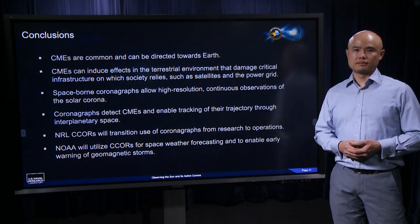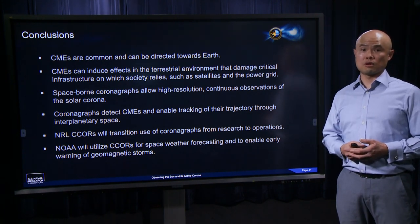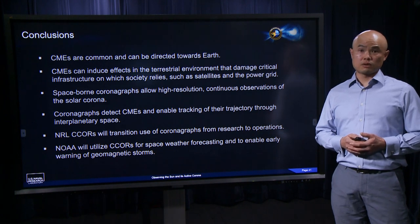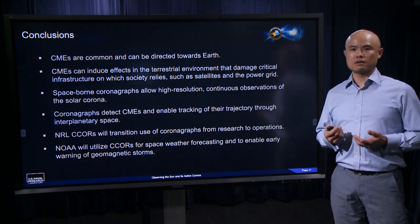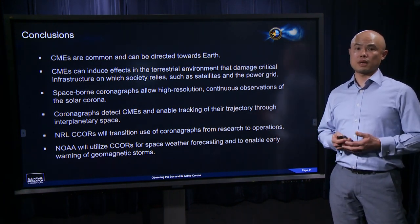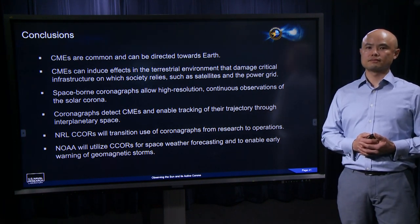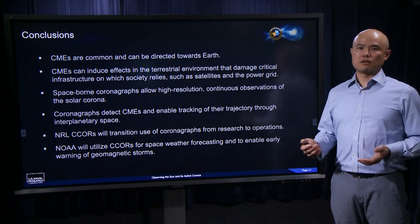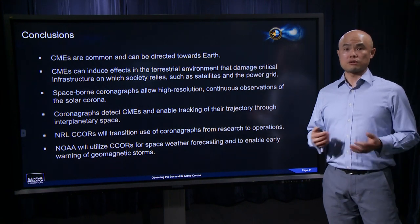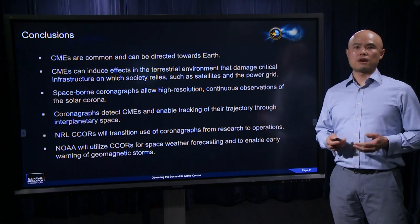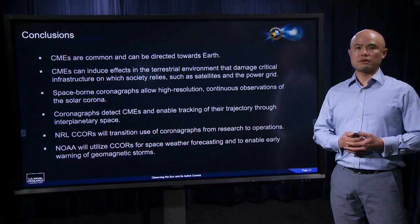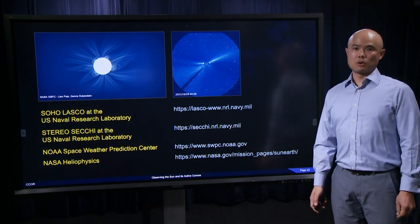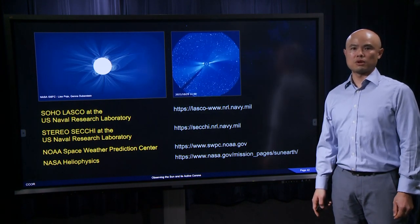Here are some takeaways from this presentation. CMEs are a commonly observed phenomenon in the solar corona, and many can be directed toward Earth. CMEs are responsible for driving geomagnetic storms and their associated space weather effects that threaten critical infrastructure — including power grids and assets operating in orbit. Space-based coronagraphs provide an early warning capability for the detection of CMEs, and NRL has been successful in transitioning our expertise in coronagraph development from the research world to operations. We look forward to continuing our partnership with NOAA to utilize C-CORE to enhance space weather forecasting capabilities. Thank you for listening, and if you have questions or want to learn more about the solar corona and coronagraphs, links are available on the web for more information.